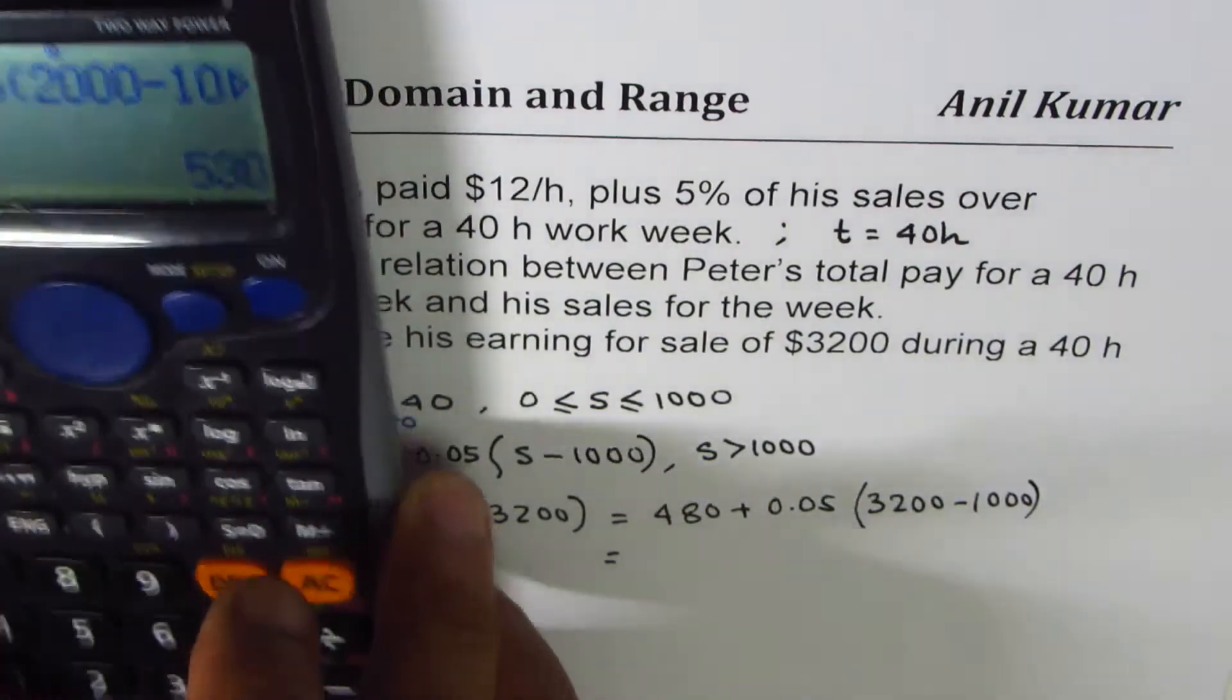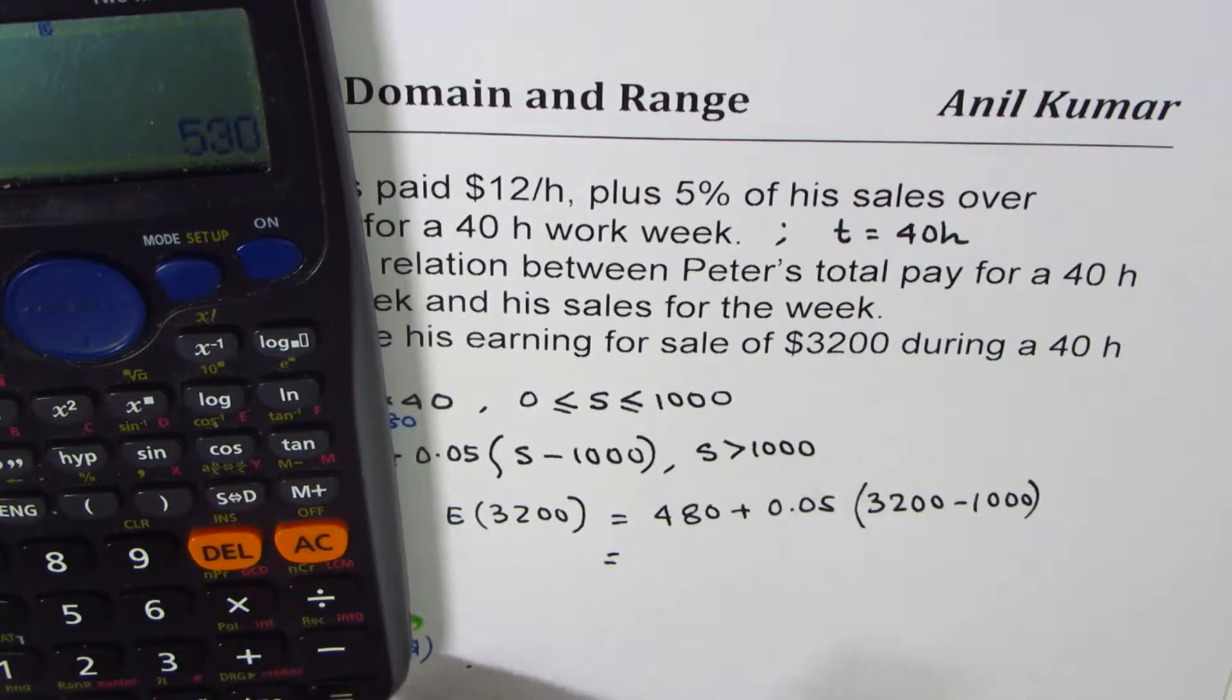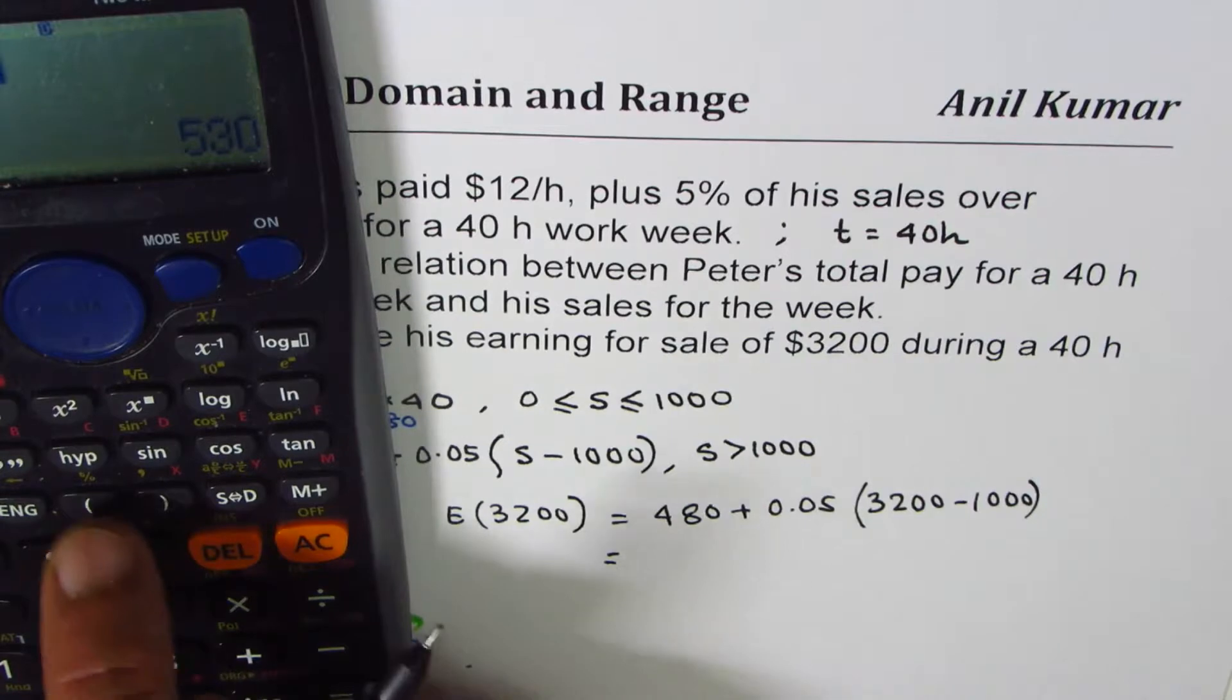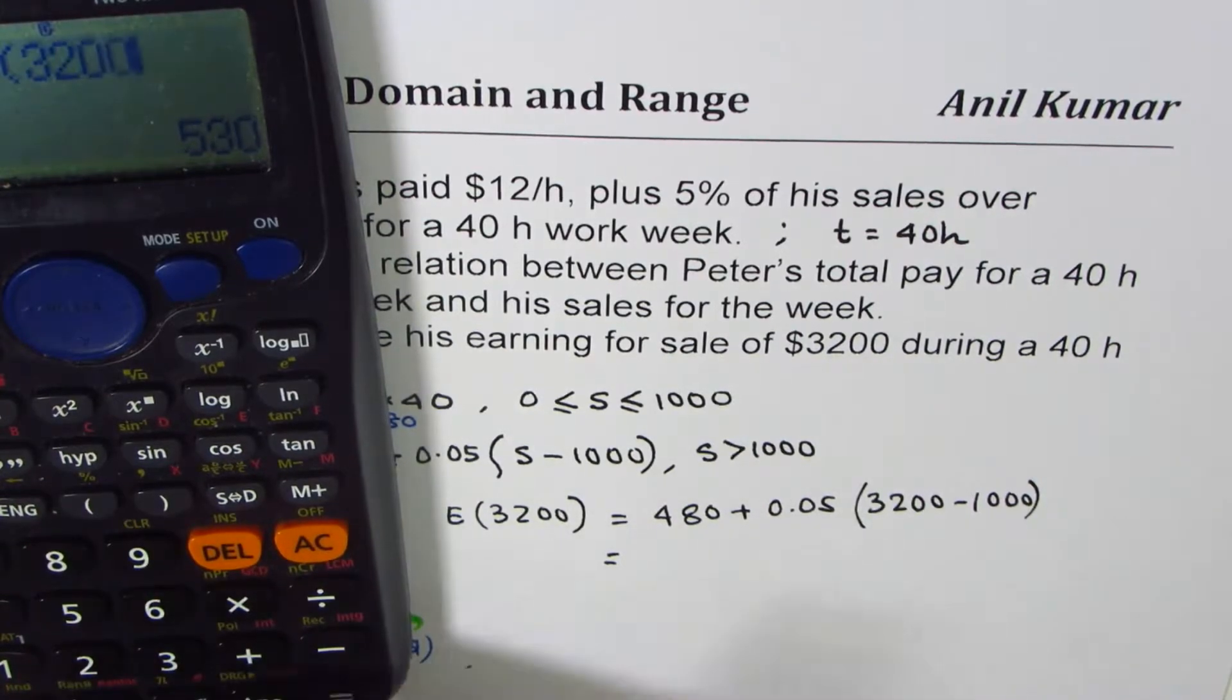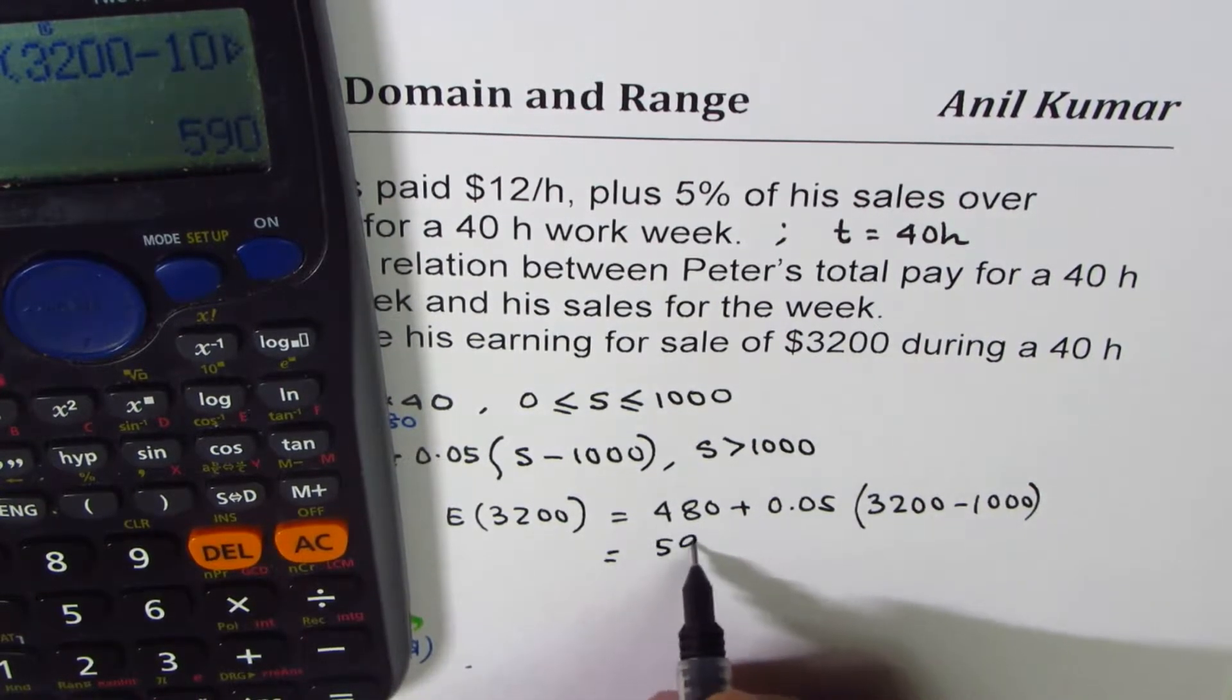So we can calculate this. We have 480 plus 0.05 within brackets 3200 minus 1000, bracket close, equal to 590.